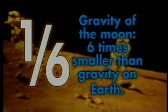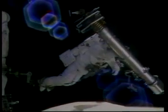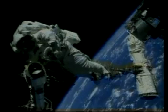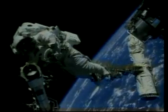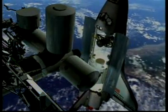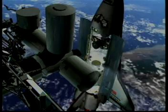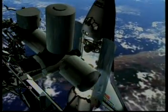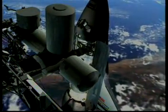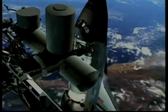The ratio one sixth means that the gravity of the Moon is six times smaller than the gravity on Earth. We sometimes use the term microgravity to describe a condition where gravity is not small but appears to be small. This is a condition experienced on orbiting spacecraft such as the International Space Station, or ISS, the Space Shuttle, and all objects in free fall.